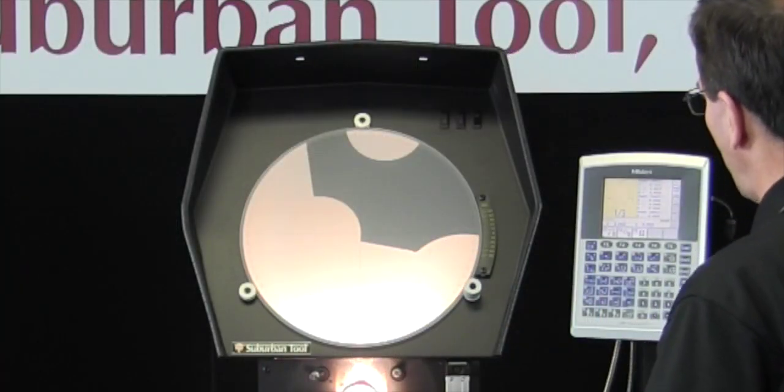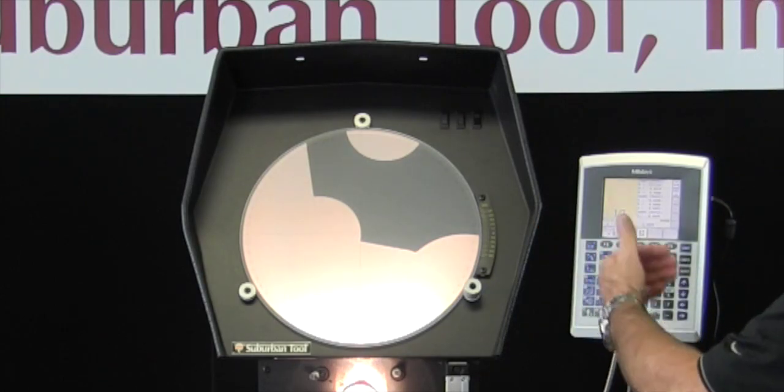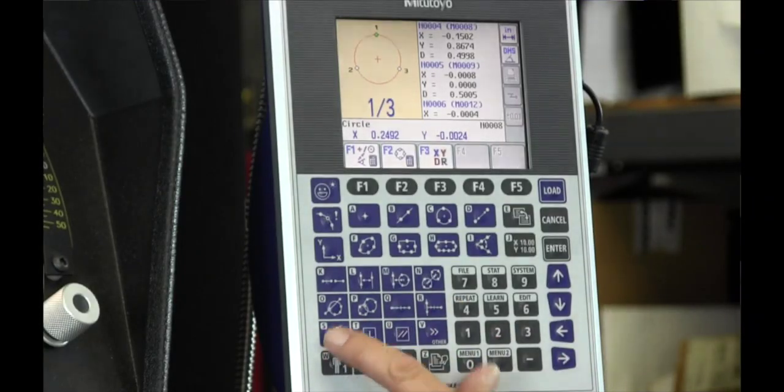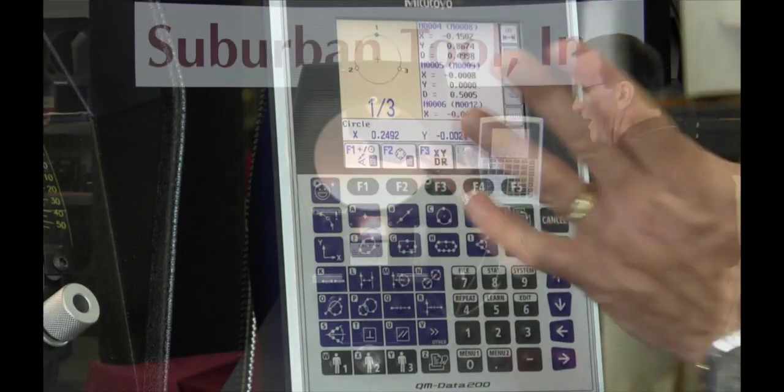You can reuse any of those features if you wanted to. If you needed the intersection of that circle and one of those lines, it's a canned function.